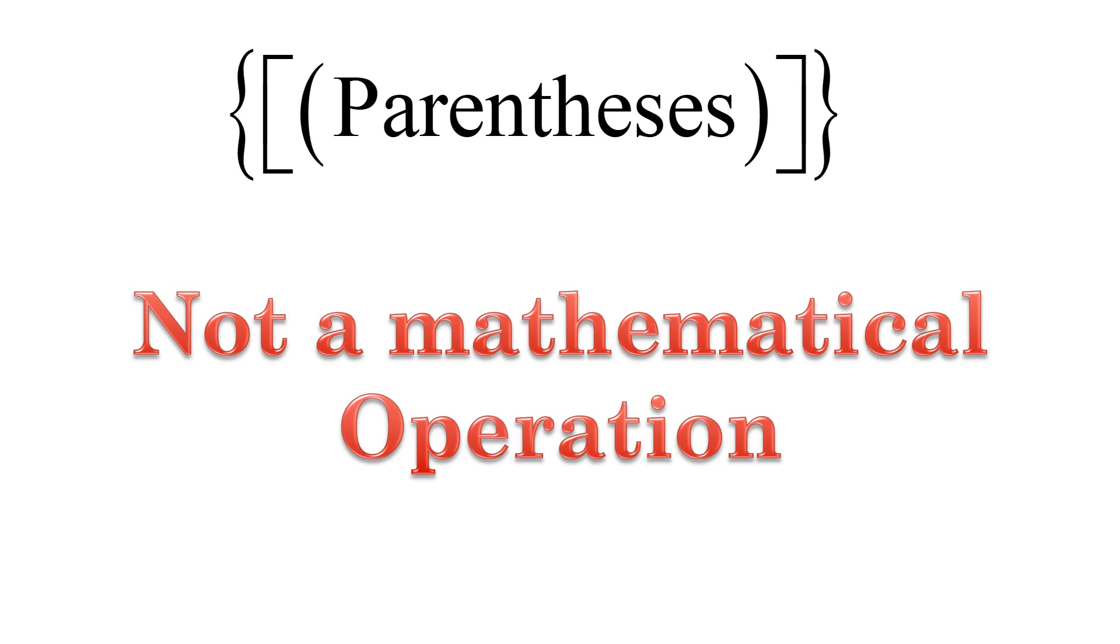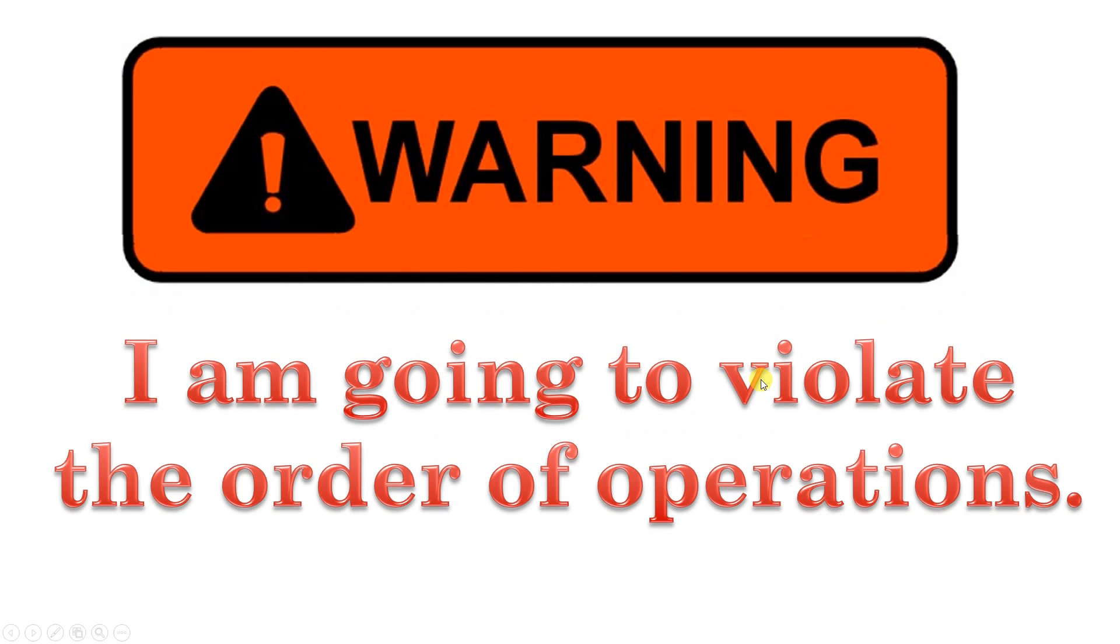Now, parentheses is where we get hung up a little bit. Parentheses is 100% just convention. We agree that if we draw a parentheses or a bracket of some sort around something, we've grouped it together and it means that we have to do that first. Just like a period at the end of a sentence, a dot means the sentence is over. There's nothing intrinsically meaningful about that dot. We just all agree it means the same thing. That's what convention is.